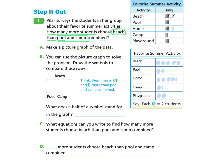Now we're ready to look at Part B. Part B says you can use the picture graph to solve the problem. Draw the symbols to compare these rows — we're comparing beach and pool and camp combined. First, we're going to look at beach. Beach has five symbols, so we're going to draw those in right here.